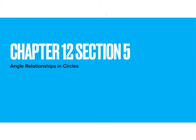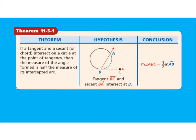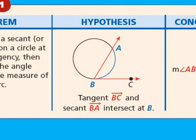12.5 deals with angle relationships in circles. Our first theorem states: if a tangent and a secant or chord intersects on a circle at the point of tangency, then the measure of the angle formed is half the measure of its intercepted arc. We've done this before with inscribed angles, but here we have a tangent and either a chord or a secant.